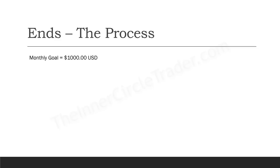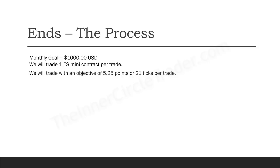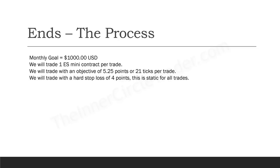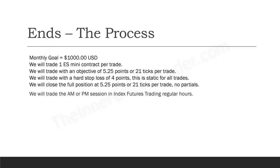The process: we're targeting $1,000 a month to attack a major bill for that month. We will trade one e-mini S&P contract per trade — no pyramiding, no increasing as we make more money. This is an income approach only. We will trade with an objective of five and a quarter points, or 21 ticks per trade. After commissions, it should be $250 per contract. We'll trade with a hard stop of four points — a static stop loss for all trades. We'll close the full position at five and a quarter points. No partials — one and done.